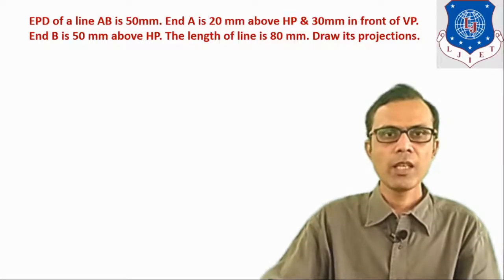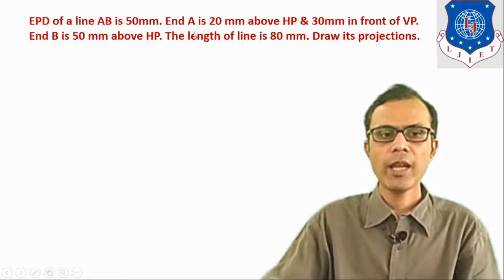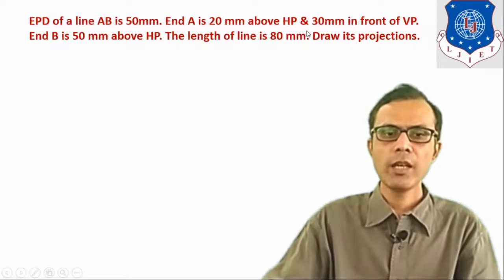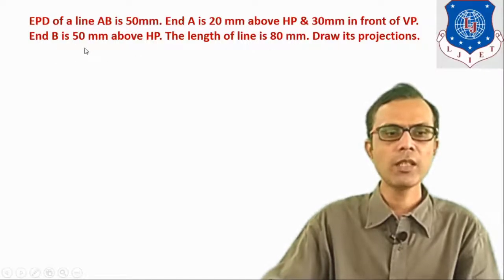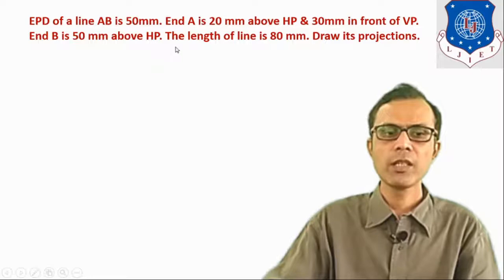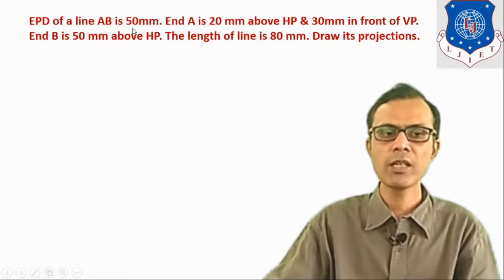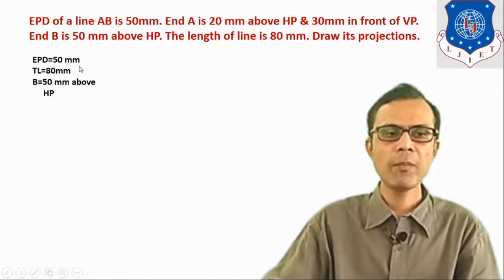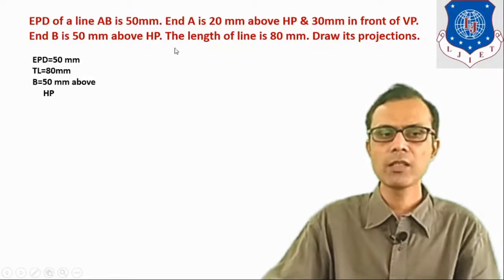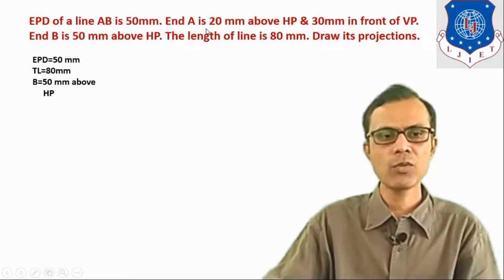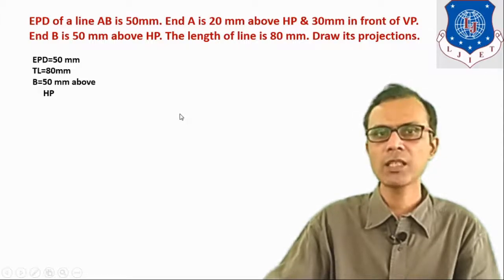Next example. The EPD of line AB is 50 mm, and A is 20 mm above HP and 30 mm in front of VP. Another end B is 50 mm above HP, and the true length of the line is 80 mm. The main data here is EPD — end projector distance — which is 50 mm. True length is 80 mm. Location of end A: 20 mm above HP and 30 mm in front of VP. End B is 50 mm above HP. These are the given data.